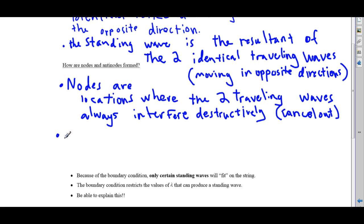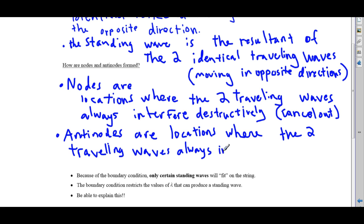On the other hand, antinodes are locations in the medium, locations on the string, where the two traveling waves always interfere constructively.